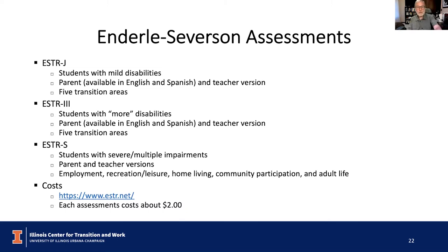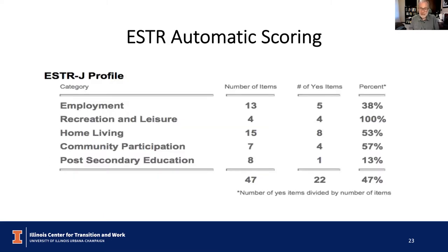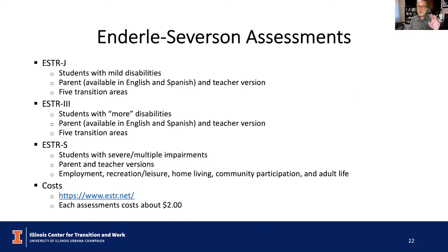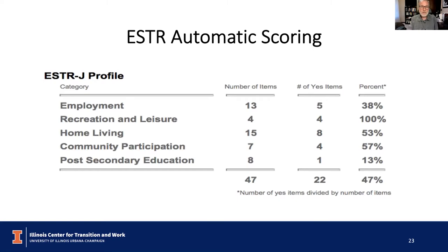You buy them from ESTA.net; each costs about $2 for the paper-pencil or online version. The ESTA-J — for students with mild disabilities — shows categories and a scoring profile across domains: employment, rec and leisure, home living, community participation, and post-secondary education. It shows the number of items and the number of 'yes' items — for example, 100% in rec and leisure, 13% in post-secondary ed, 38% employment, and 47% overall.